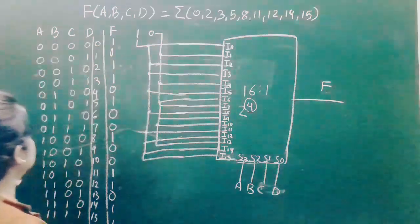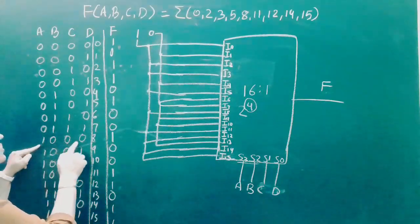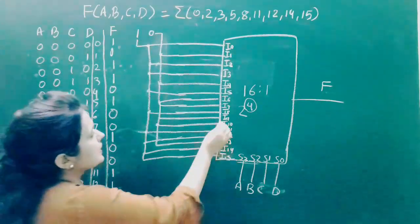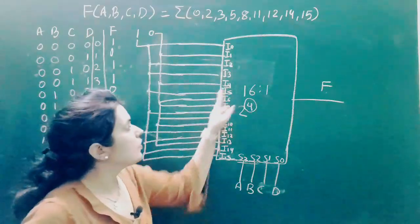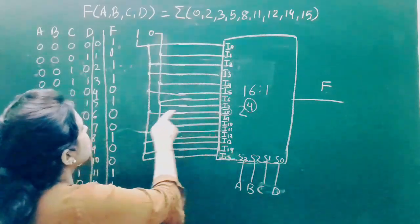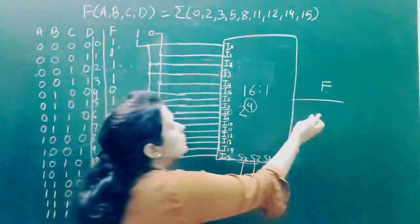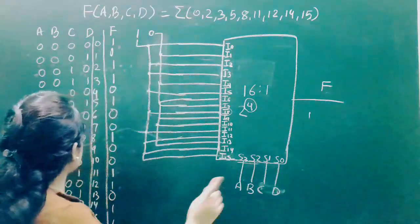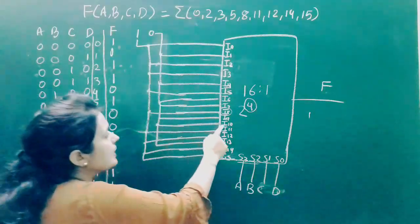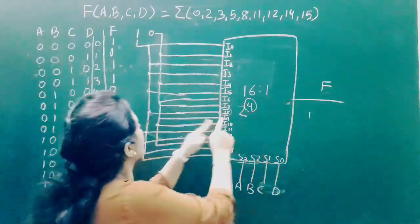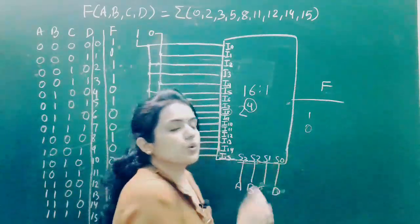For example, when A, B, C, D = 1, 0, 0, 0, data from I8 is selected. Since I8 is connected to 1, we get a high output. When A, B, C, D = 1, 0, 1, 0, data from I10 is selected. But I10 is connected to 0, so we get a low output.